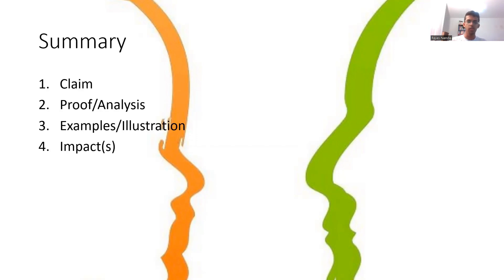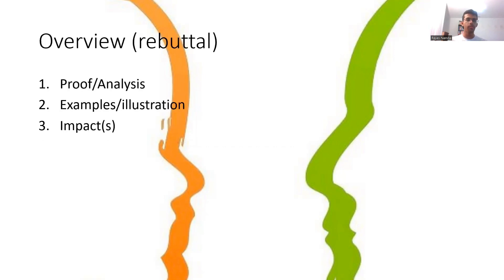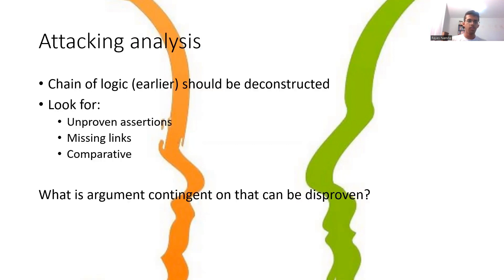Just to summarize, these are the four main components of your argument: claim, proof, examples, impacts. Now let's move on to rebuttal. It's quite similar in the sense that you're talking about the same types of components — analysis, examples, impacts. But now these are the things which your opposition has just said, and your job is attacking these three components and explaining why they're not that important or they're not true.